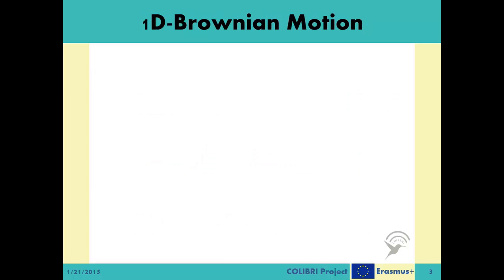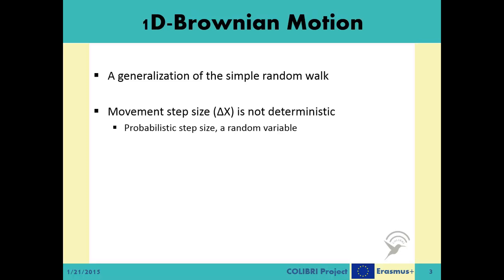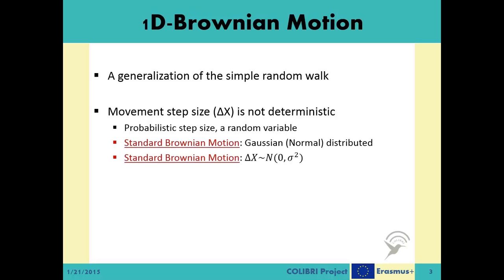So what happens if the size of a single step is not the same? A Brownian motion can be called a generalization of a simple random walk process, in which the step size can come from any random distribution. It has been widely accepted in the literature that, in order to capture the real diffusion dynamics, a Gaussian random variable is a good selection for the step size random variable. This is called the standard Brownian motion, or the Wiener process.